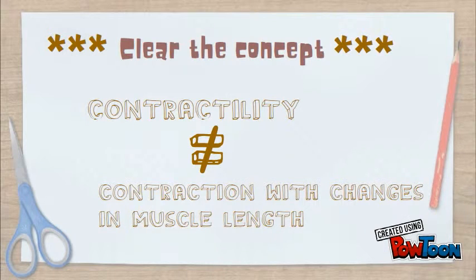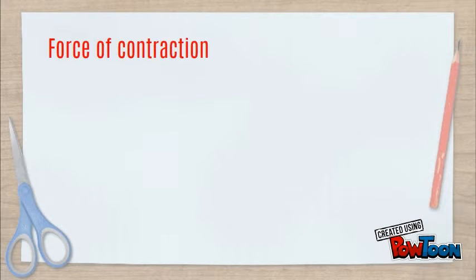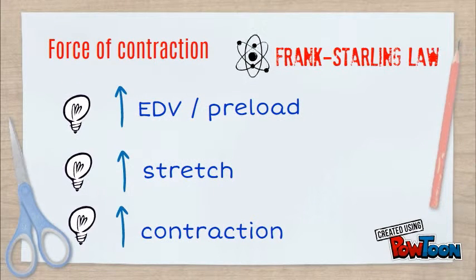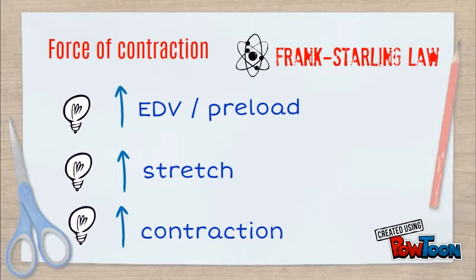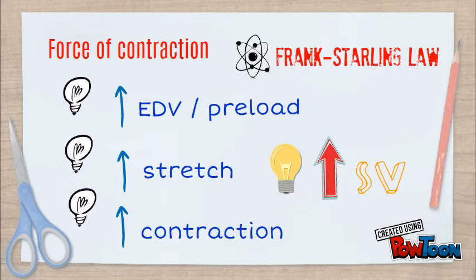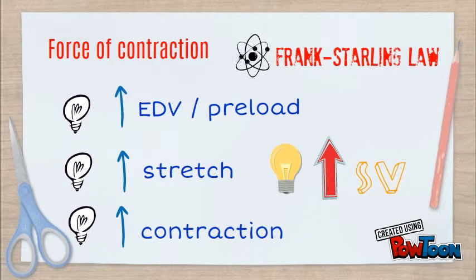Remember that contractility is not equal to contraction with changes in muscle length. The force of contraction follows the Frank-Starling law. When EDV increases, the muscle wall stretches more, contraction increases, and thus stroke volume is increased.